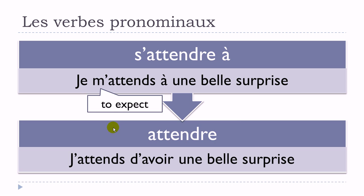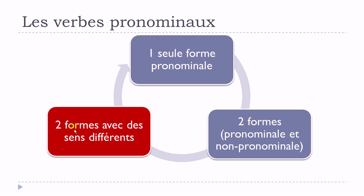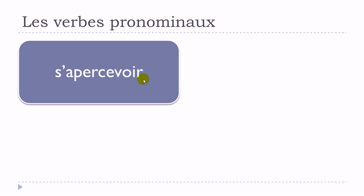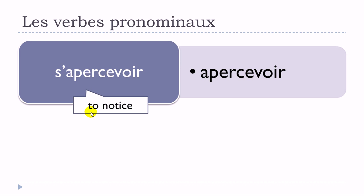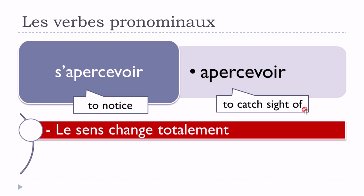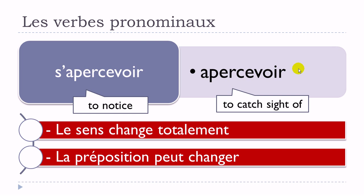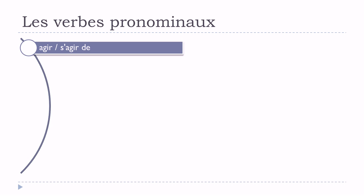Now the third situation: some verbs have two forms — pronominal and non-pronominal — but strangely the meanings change significantly. These verbs look alike but the meaning is really different. For example: s'apercevoir and apercevoir. S'apercevoir means 'to notice' and apercevoir means 'to catch sight of' — le sens change quite a lot, and la préposition peut changer depending on which form you use.